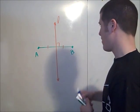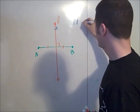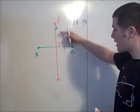That is, if I have some point P here, PA is equal to PB, and that is for any P on L.